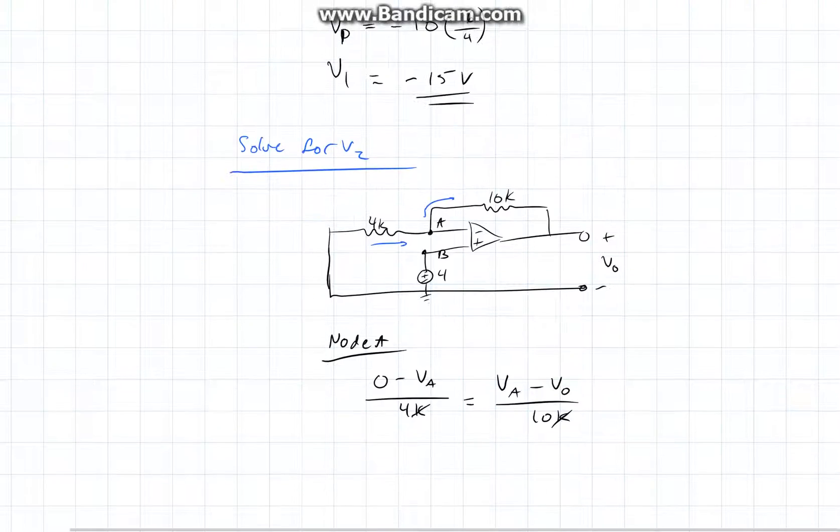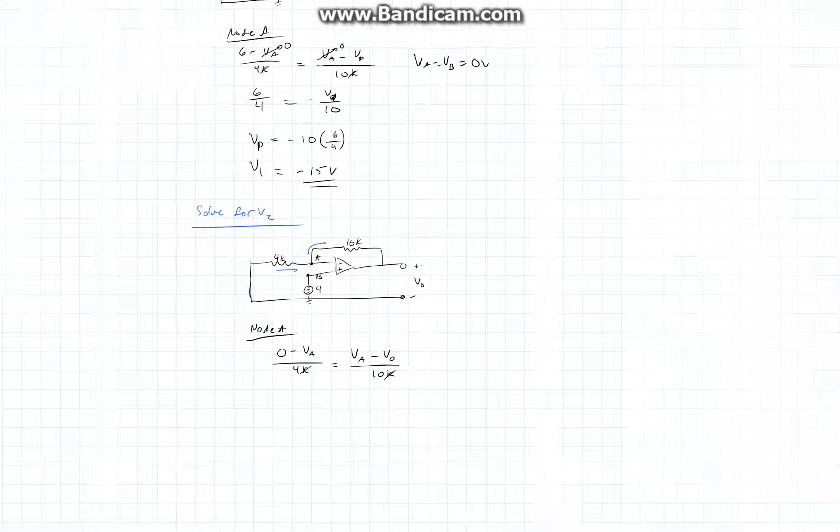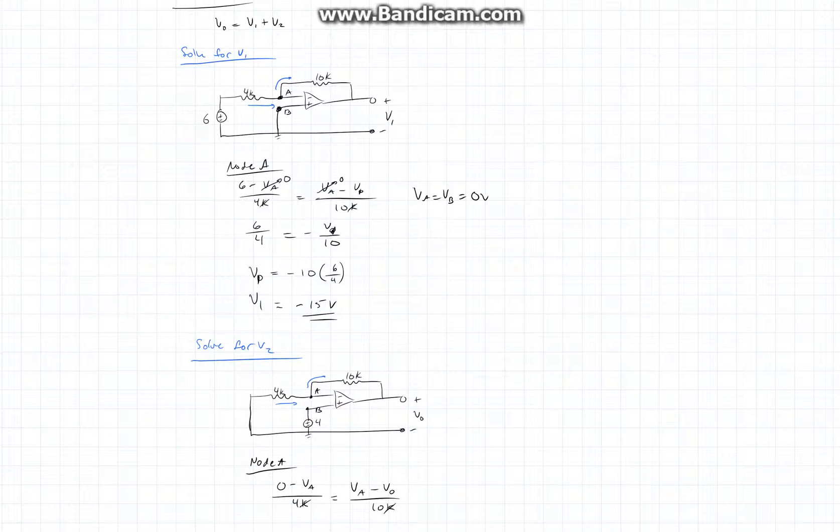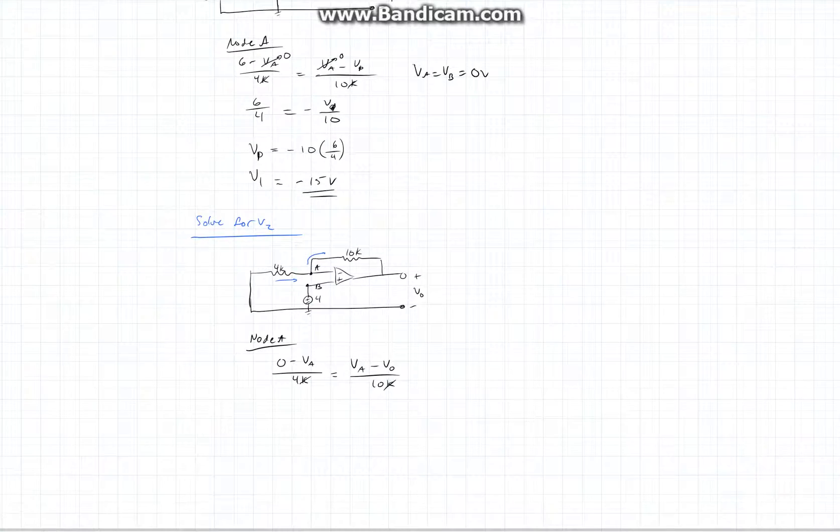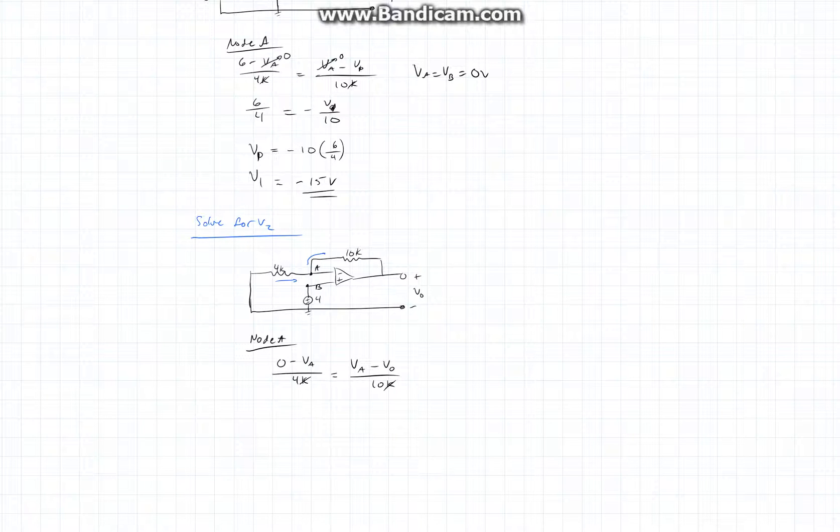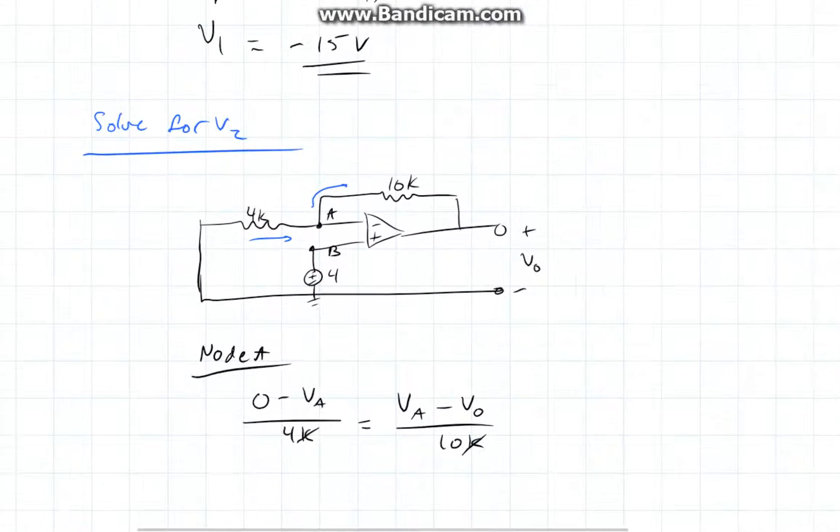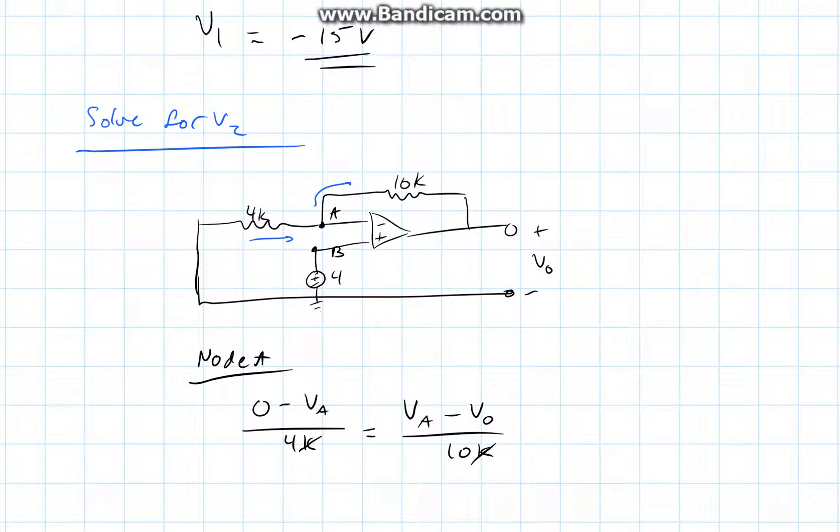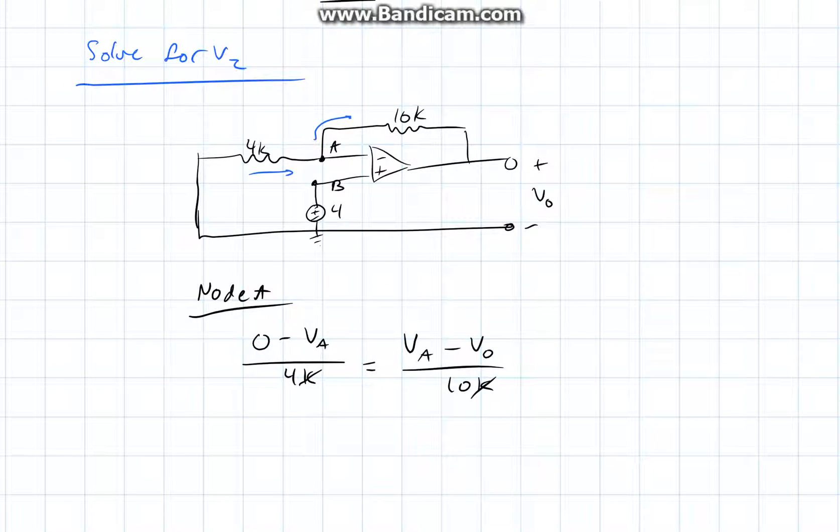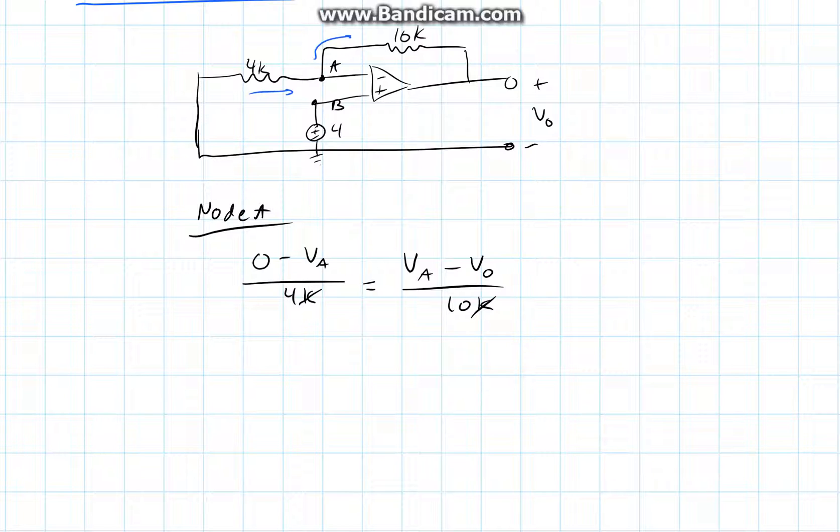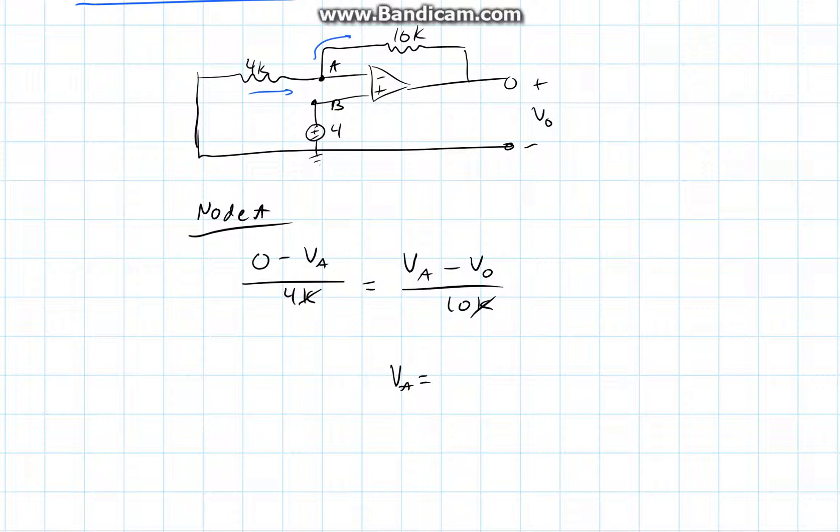Now, before, look at what we did before. We said that VA equals VB which is equal to 0 volts, which makes sense. So now if VA were to equal VB, we need to consider that this 4 volt power source is connected to ground here, so the difference from here to node B must be 4 volts. So our relationship that we can write this time is VA equals VB equals 4 volts.